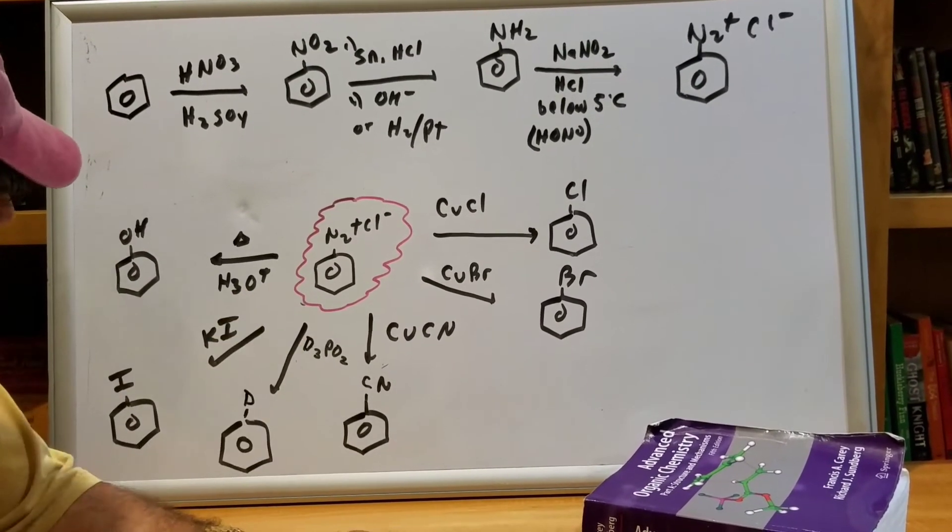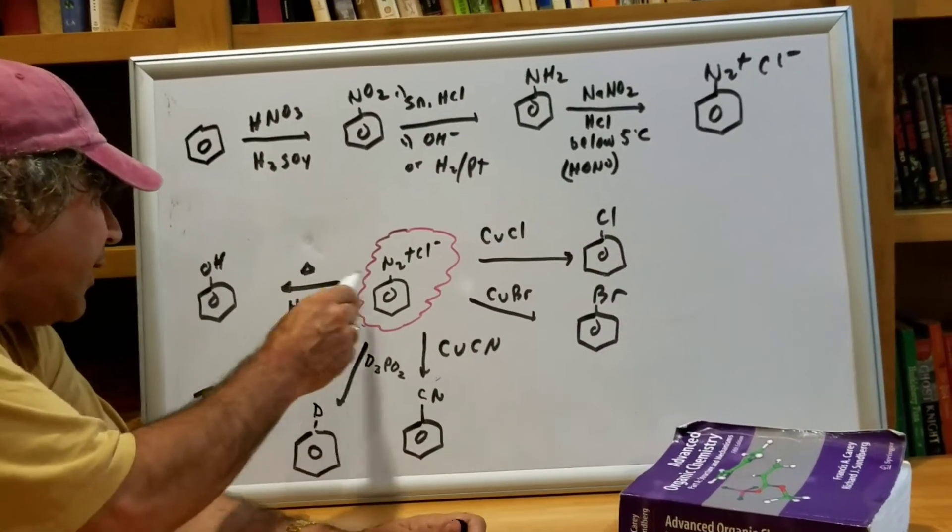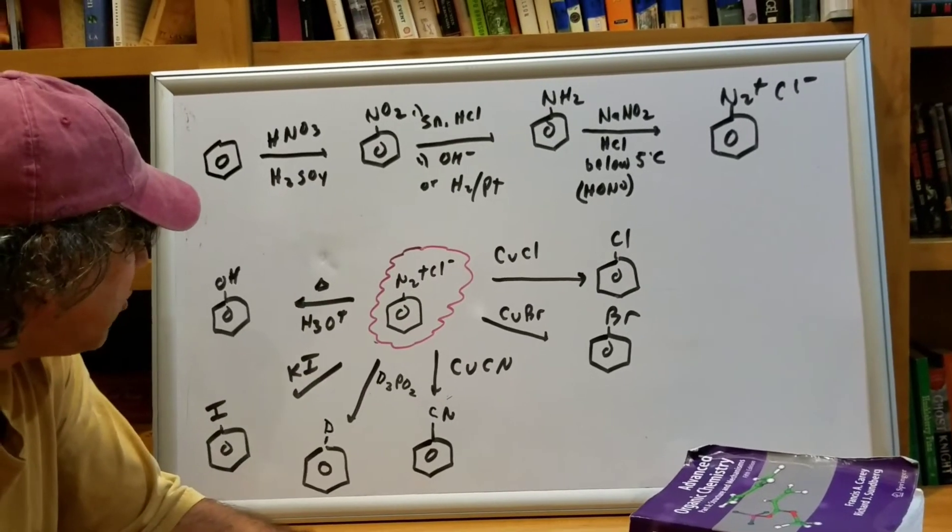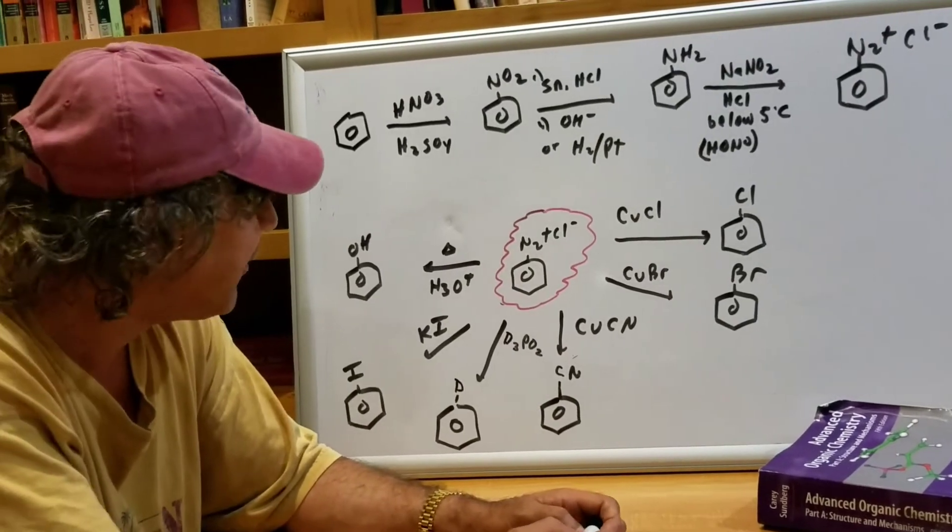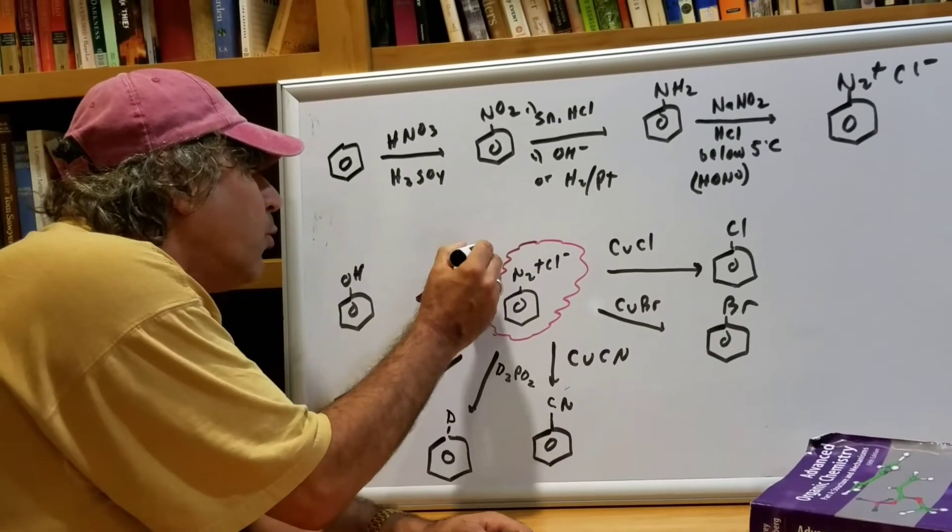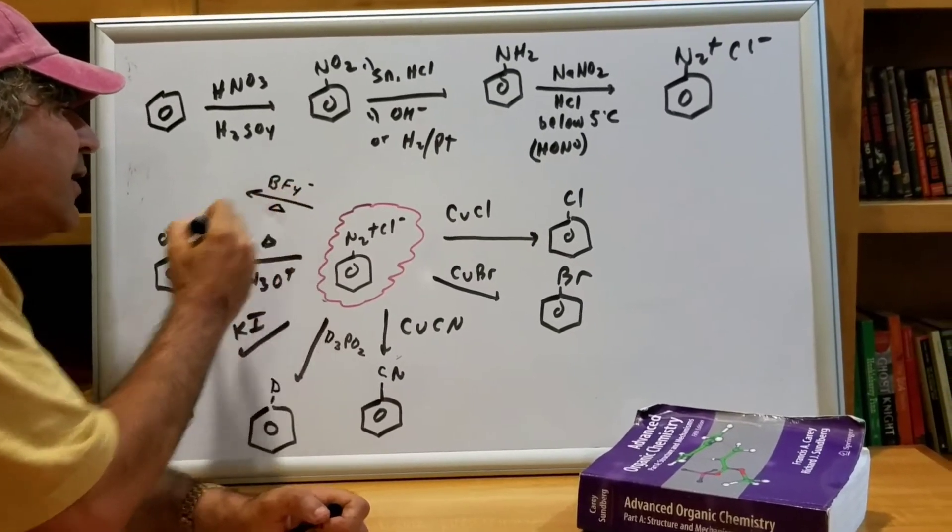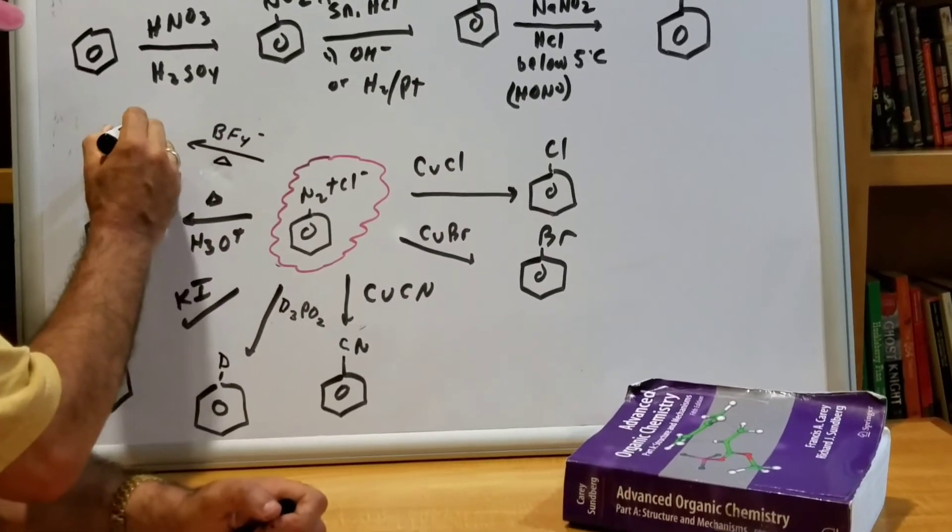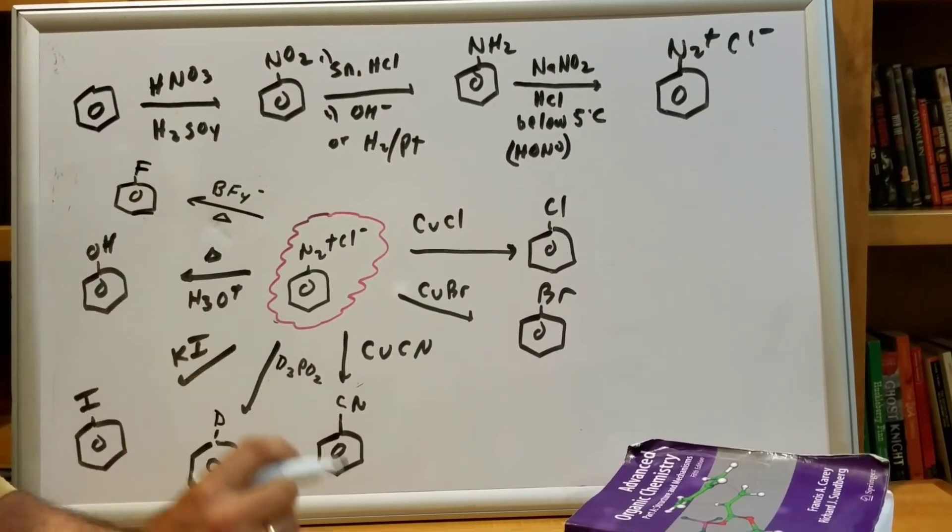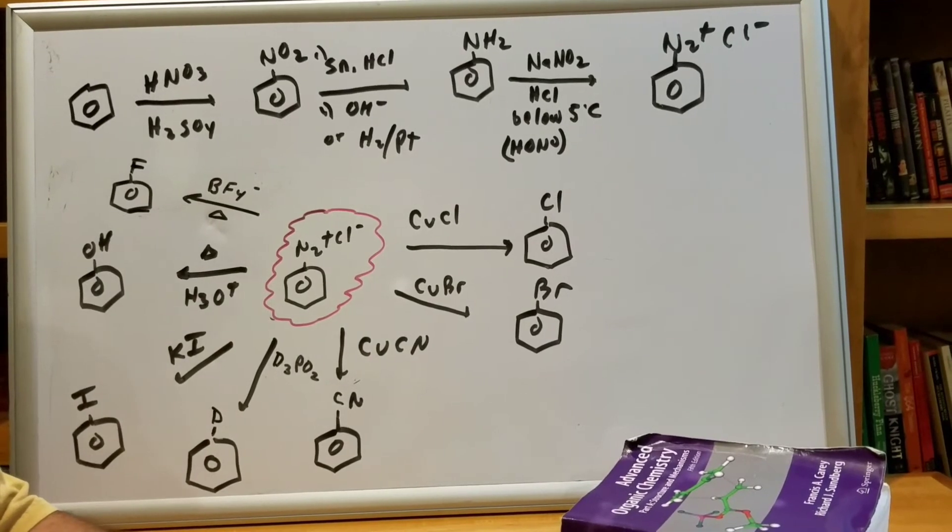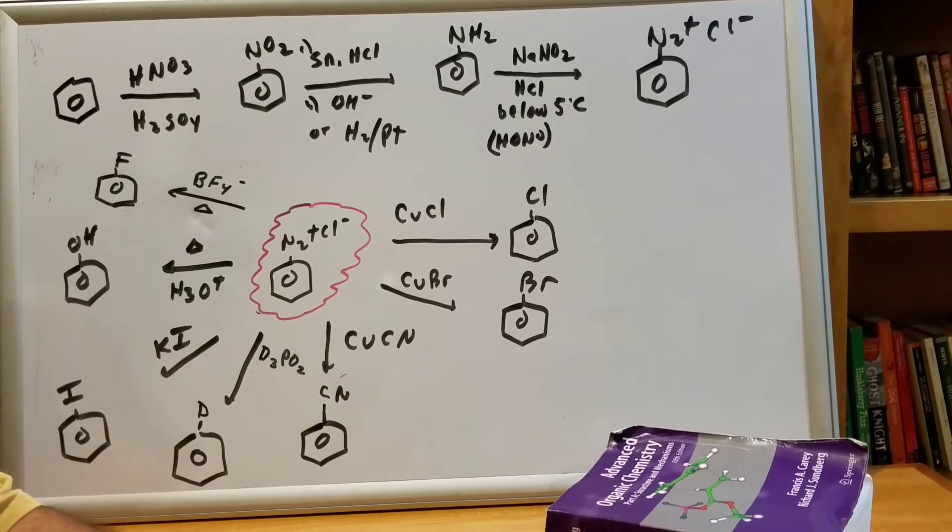Another reaction we can do is potassium iodide. That puts on an iodide. Heating the diazonium salt with H3O plus puts on a phenol. It's one of my very favorite ways to make a phenol. And finally, one other reaction which I missed here, if we react this with BF4 minus and heat, we install a fluorine group. Fluorine is not so easy to put on a benzene ring, but by doing it through a diazonium salt, this transformation is quite easy.